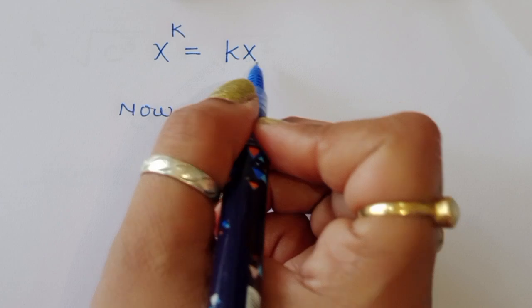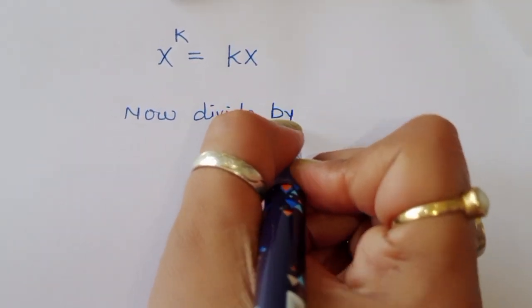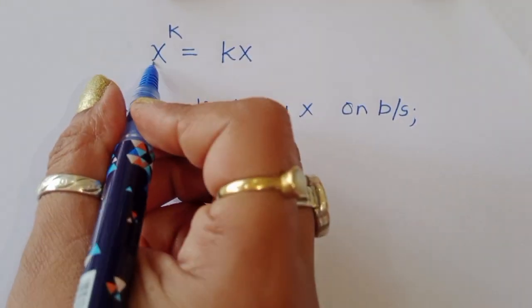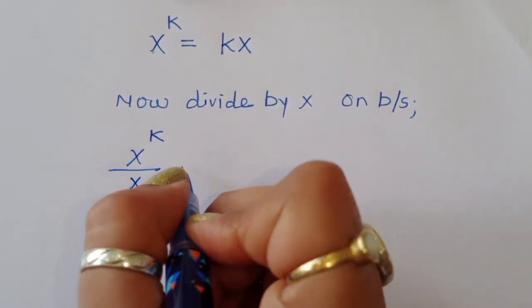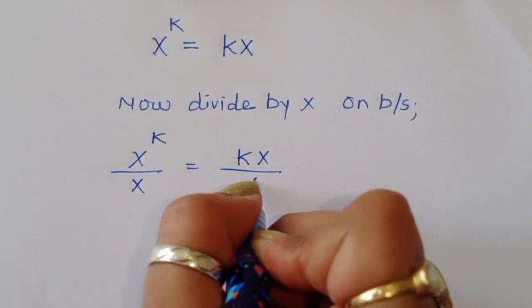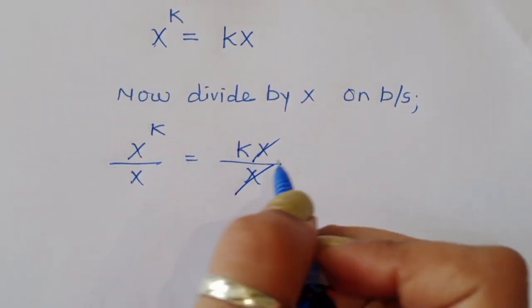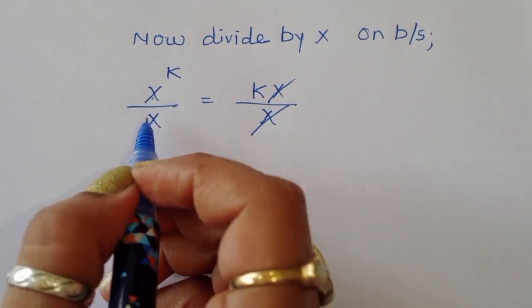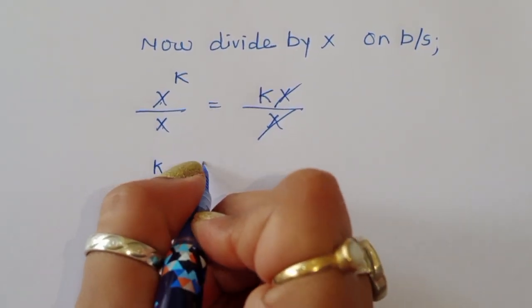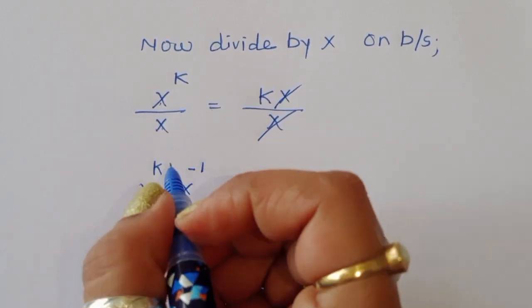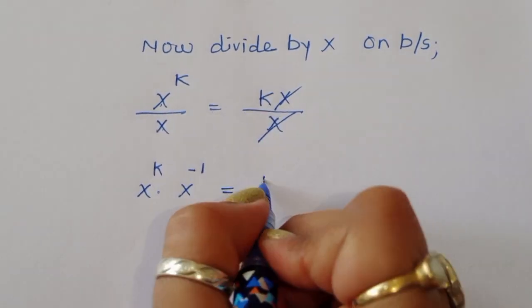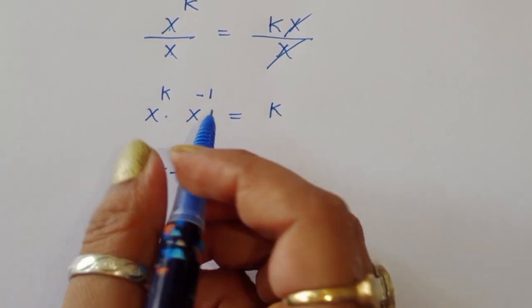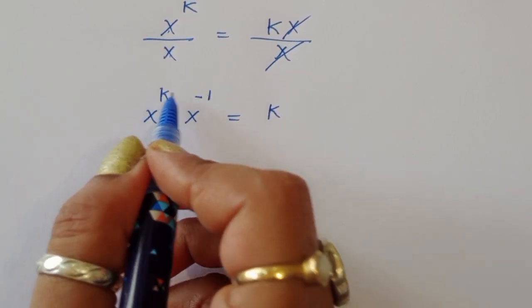Now divide both sides by x because we have to cancel the x term. Dividing by x on both sides: x^k · k divided by x equals kx divided by x. The x on the right cancels, giving k. On the left, x^k times x^(−1) becomes x^(k−1), using the rule a^m · a^n = a^(m+n). So x^(k−1) = k.